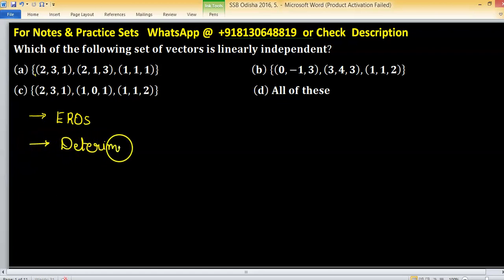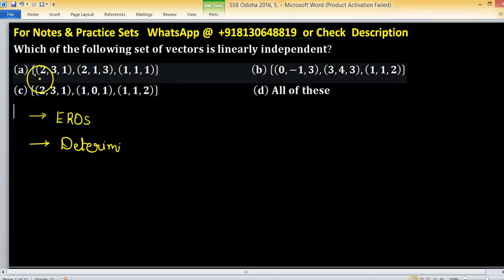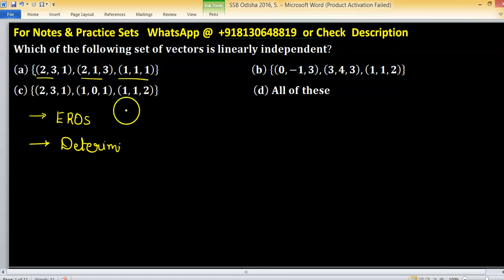Determinant is more convenient for some, and sometimes elementary row operations. So in the first set, we have three elements as I already underlined.